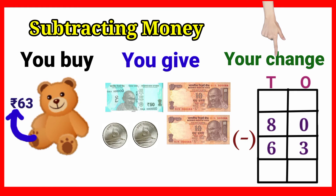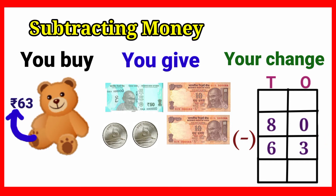See this: 80 rupees minus 63 rupees. We have to find the remaining change. First, subtract the ones place. 0 minus 3 — we can't do that directly. So we borrow 10. The ones place now has 10. 10 minus 3 equals 7. So ones place answer is 7.